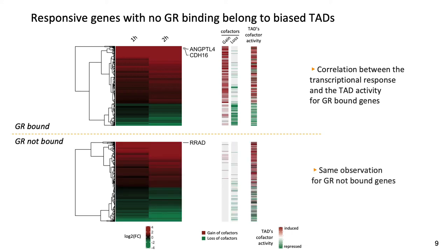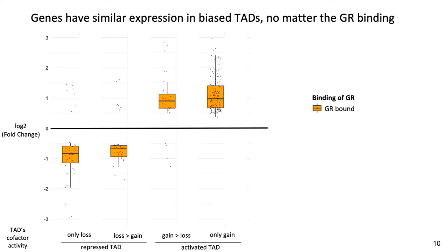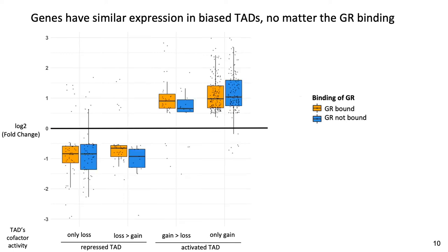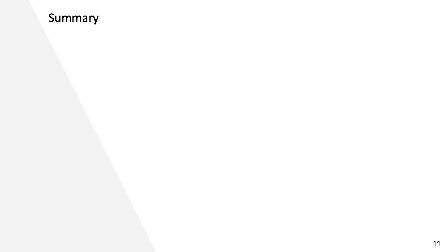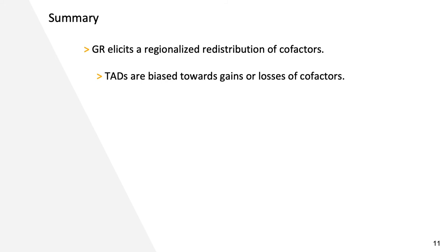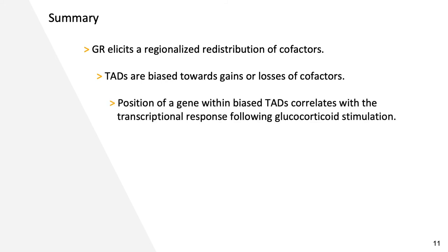While looking at genes not bound by GR, we can do the same analysis. Here we evaluated changes in expression of genes depending on the TAD activity. We observed that in repressed TADs, genes are repressed, and in the same way induced genes are in activated TADs. We observe that the distribution of changes in RNA expression is similar in both GR-bound and GR-unbound genes, no matter the GR binding status.